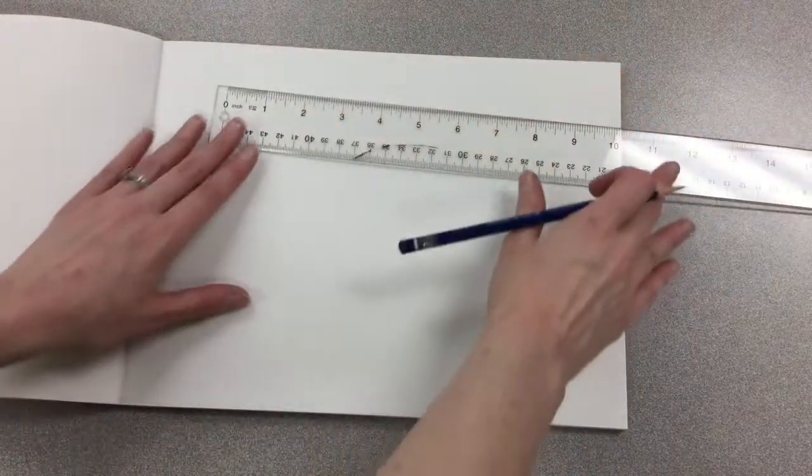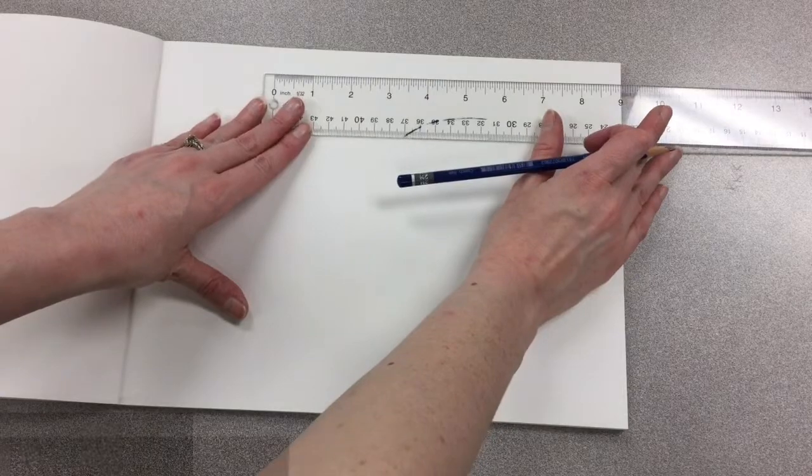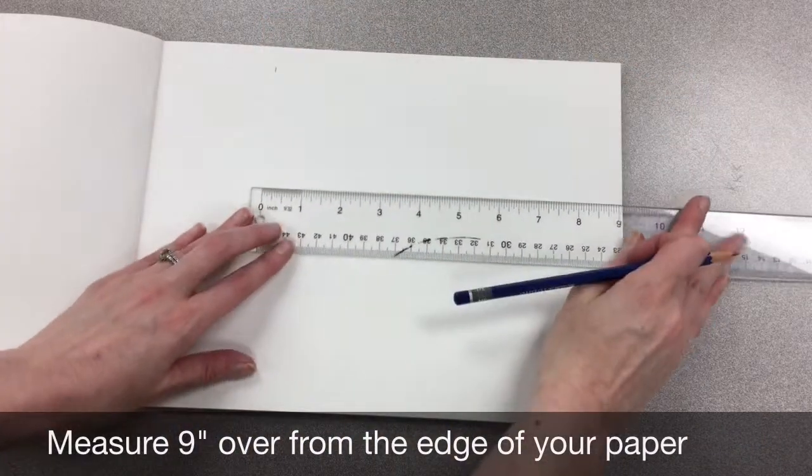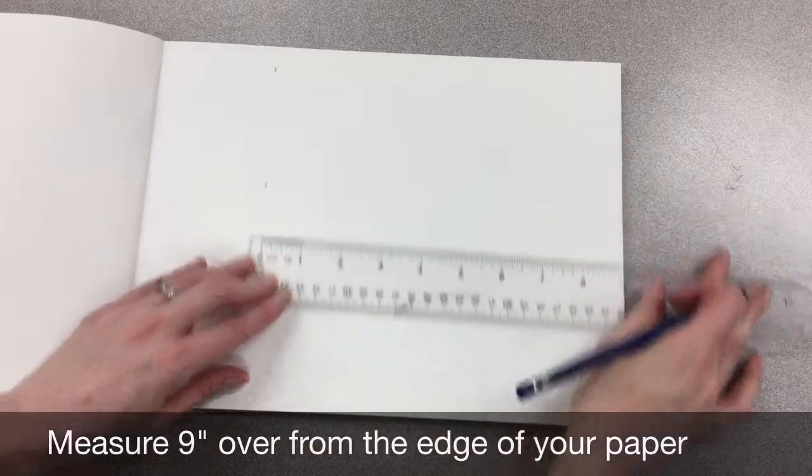Here I have a clean page in my sketchbook. I'm going to take my ruler and measure over nine inches from the edge of my paper. I'm going to make several marks so that I can make sure I have a straight line when I connect the dots.